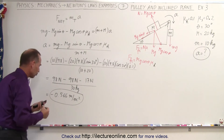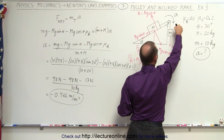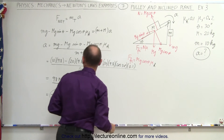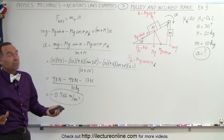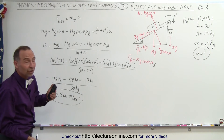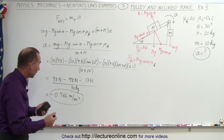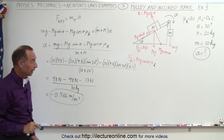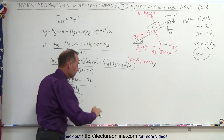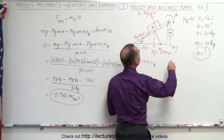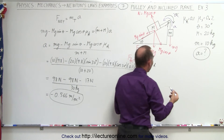Here we have a strange result. We assumed acceleration in the clockwise direction, did everything according to that assumption, and we calculate a negative acceleration. Our initial impulse might be that the acceleration is simply in the opposite direction at 0.566 m/s², but that's not the case at all. This simply means there will not be an acceleration in the clockwise direction. So maybe there will be an acceleration in the opposite direction — let's try assuming acceleration is in the counterclockwise direction and work everything that way.